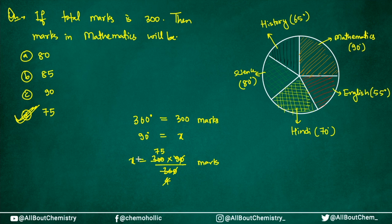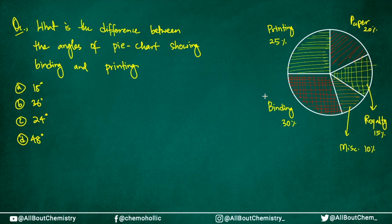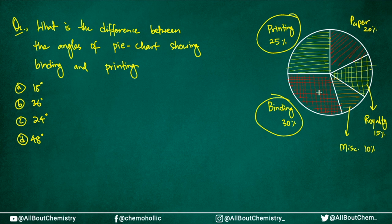Let's take another question. This is a pie chart based on different types of expenditure in printing, paper, binding, royalty, and miscellaneous for a particular book publishing. The question says: what is the difference between the angles of pie chart slices showing binding and printing? You can solve this in two ways — find both angles and take the difference, or first find the difference in percentage values.